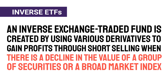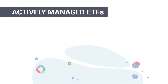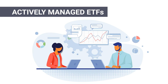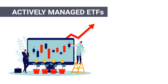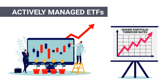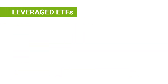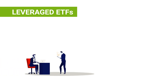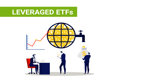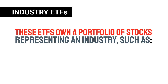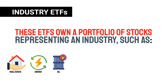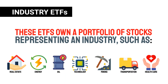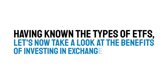Actively managed ETFs are handled by a manager or an investment team that decides the allocation of portfolio assets. Because they are actively managed, they have higher portfolio turnover rates compared to index funds. Leveraged ETFs mostly consist of financial derivatives that offer the ability to leverage investments and thereby potentially amplify gains; these are typically used by traders who are speculators looking to take advantage of short-term trading opportunities. Industry ETFs own a portfolio of stocks representing an industry such as real estate, energy and oil, technology, mining, transportation, or healthcare.